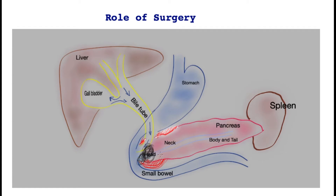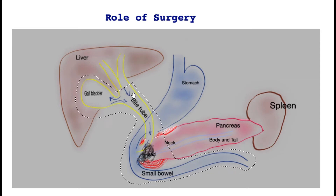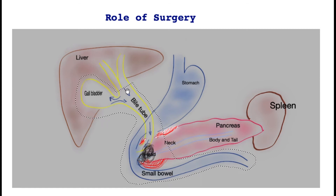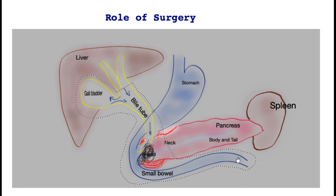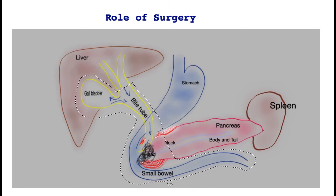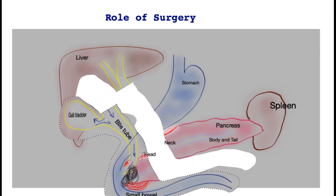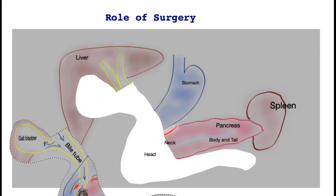So what does surgery in this part involve? This would entail cutting out all of the structures within these lines — that includes the gallbladder, greater part of the bile tube, part of the stomach or the early small bowel, the head of the pancreas and the neck of the pancreas. All of this is removed as a single piece. You can now see how the anatomy looks once all of this is removed.